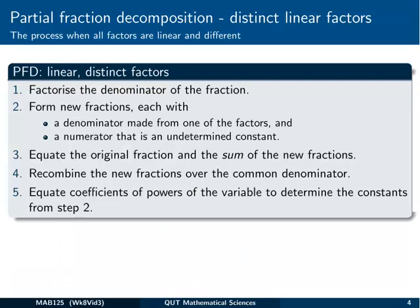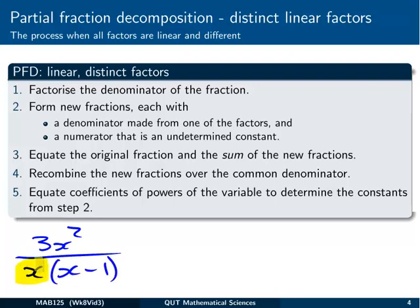So what we'll find is that once we factorize the denominator, sometimes we'll just get a set of distinct linear factors. So here I'm talking about something like maybe if we had 3x² all over x times (x-1). The factors x and (x-1) are linear. And they're distinct because they're different factors. So we call this a distinct linear factor case.